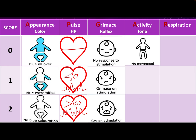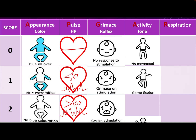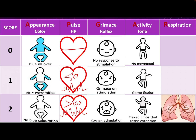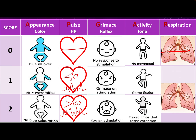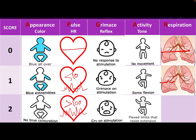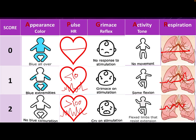For muscle tone or activity: if the baby has severe hypotonia, completely flat, he scores zero. If there is some flexion, he scores one. If there is good flexion and resistance to extension, he scores two. For respiration: if the baby is not breathing at all, he scores zero. If the baby has irregular or gasping breathing, he scores one. If there is good crying or regular breathing, he scores two.